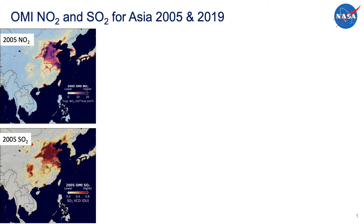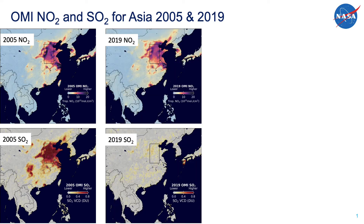These are similar 2005 OMI NO2 and SO2 maps, except for Asia. Looking at the same maps for 2019, what is interesting is that NO2 levels have not really changed that much over that 15-year period, but the SO2 is almost all gone.